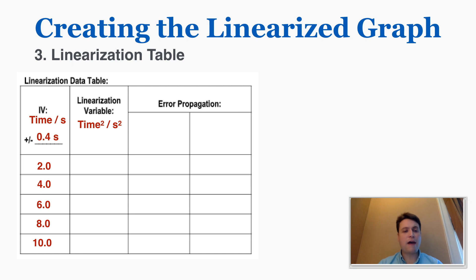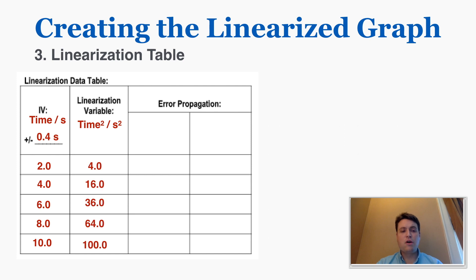The linearization table tells me what my new squared numbers are and what the new measurement uncertainties are for those squared numbers. Filling out the linearized variable column is straightforward — you just take your numbers and square them. Where you had 2, now you have 4; where you had 4, now you have 16. You're just performing the function needed to linearize the graph on your actual IV numbers.